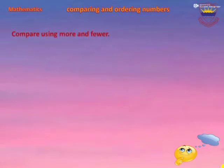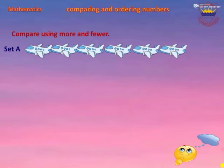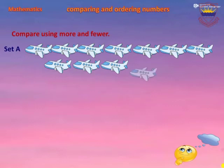Compare using more and fewer. More means many and fewer means less. In Set A there are some airplanes. Let's count: one, two, three, four, five, six, seven, eight, nine, ten, eleven, twelve, thirteen.